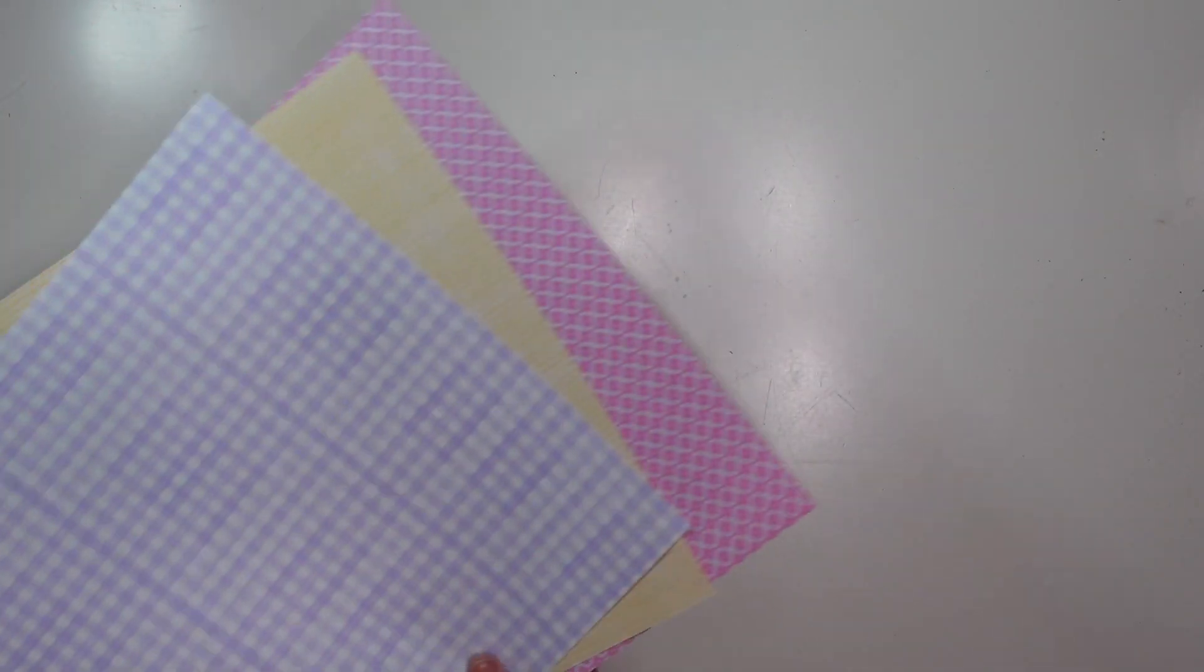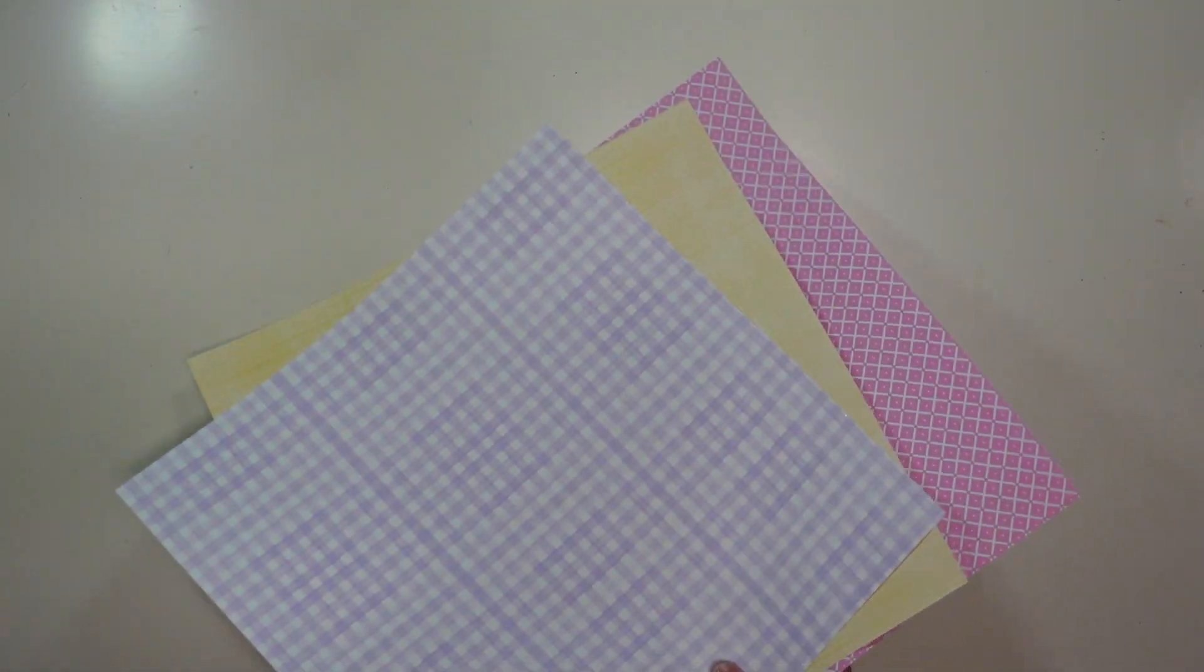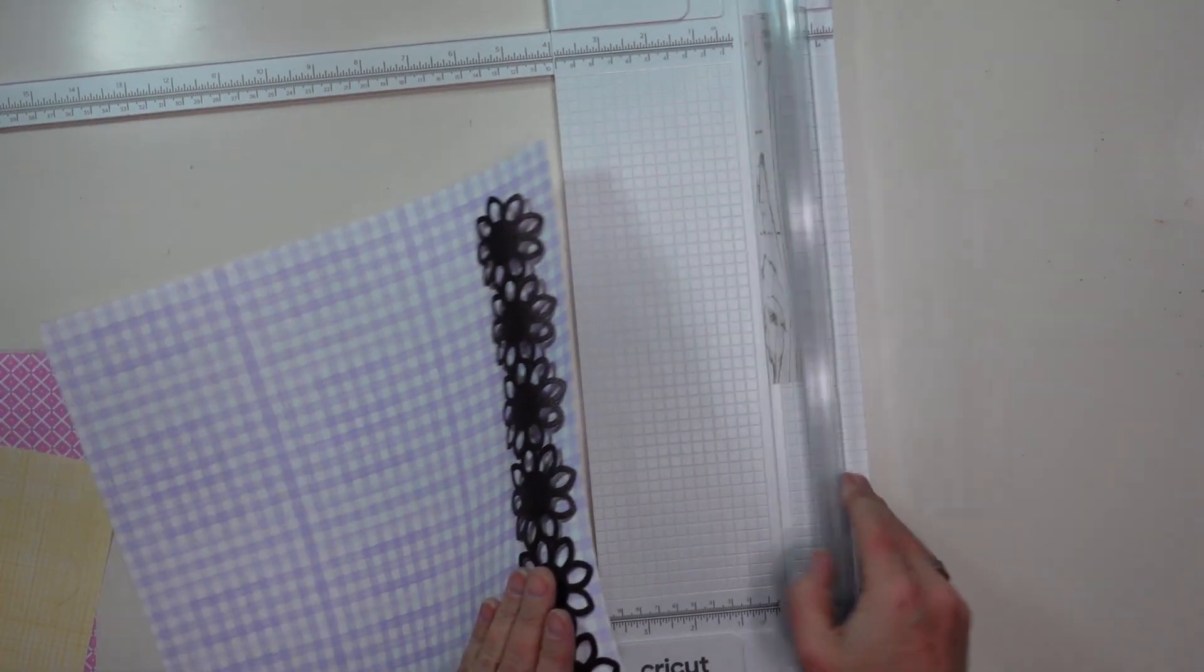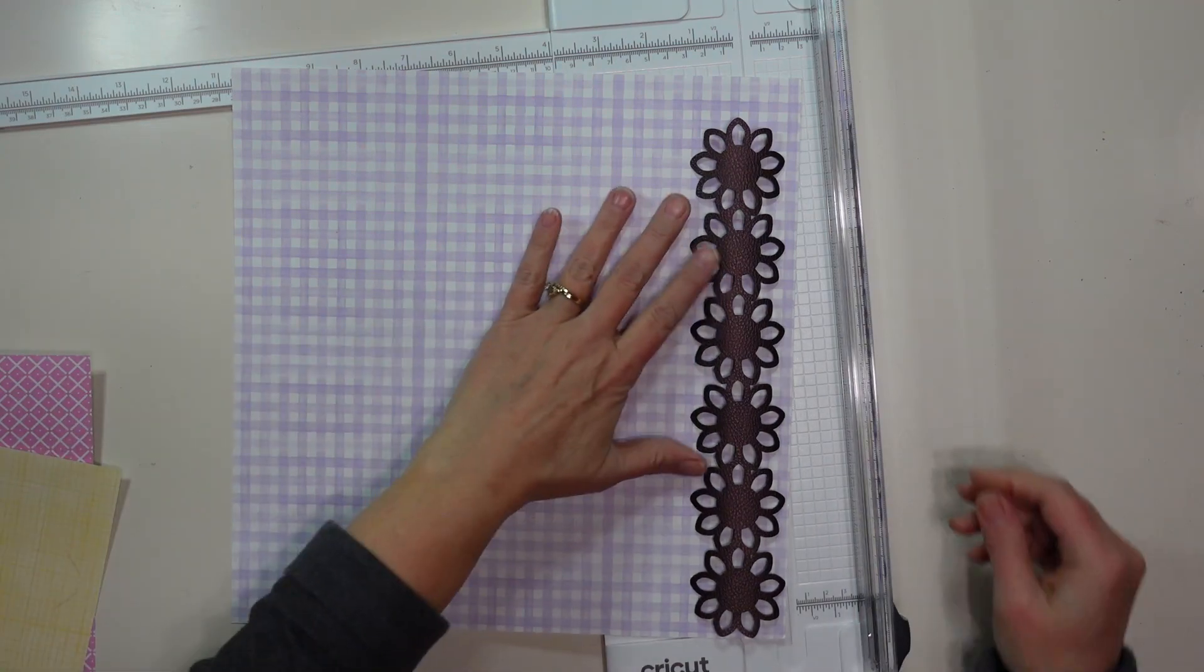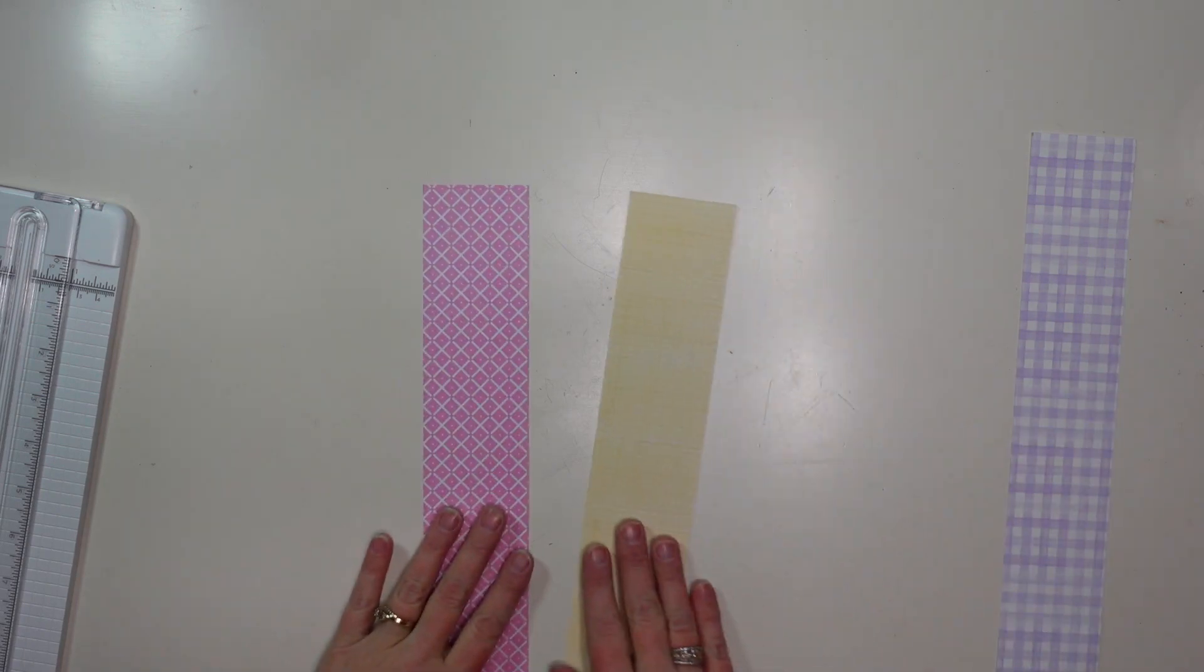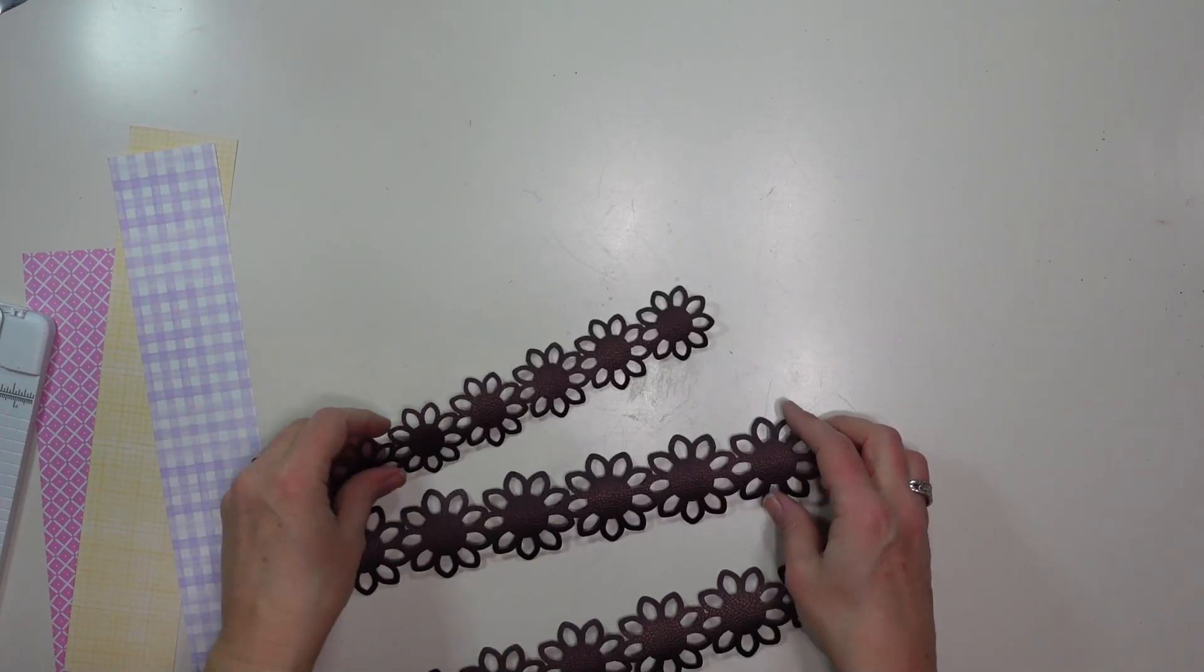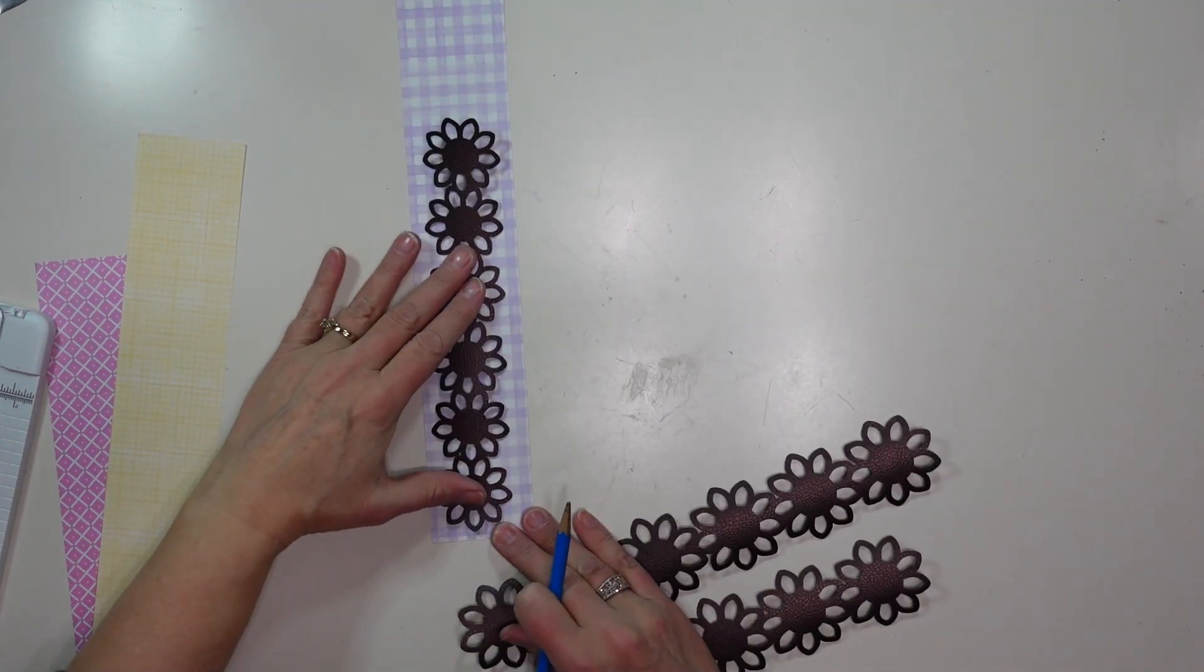Next I am going to take my patterned scrapbook paper and I am going to cut some strips to go behind my faux leather flowers. So I am just going to lay my flowers on there to see how wide I need my paper strips and then I am going to just cut them with my trimmer. And I do have one jar that is smaller so I did size one of my flowers down a little bit so I will be cutting one of my paper strips a little smaller as well.